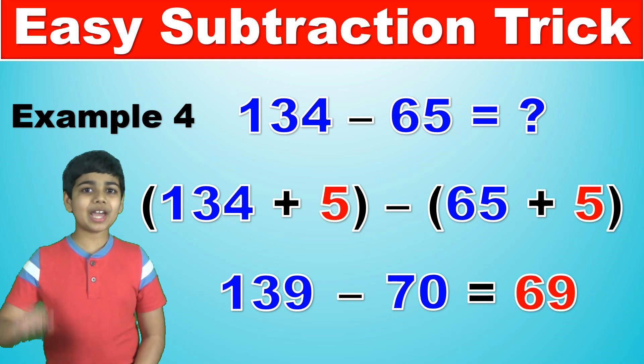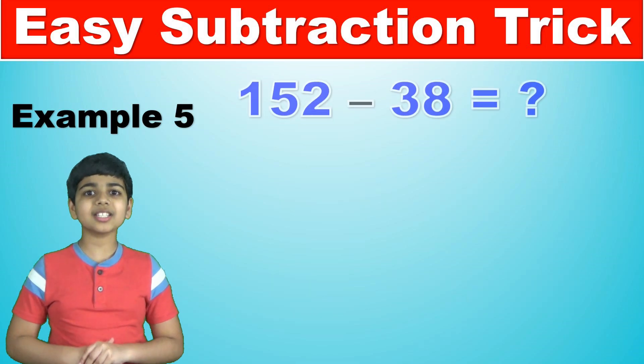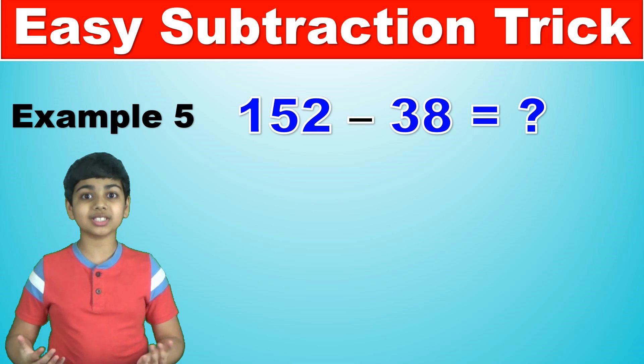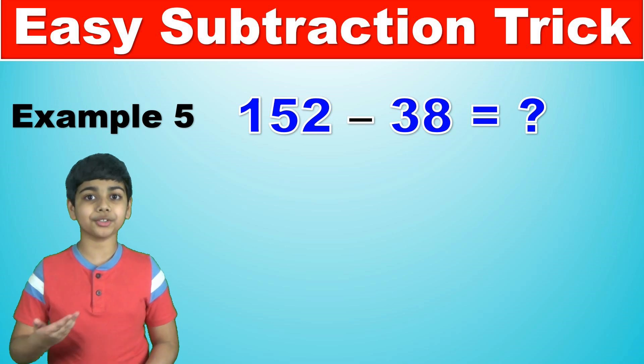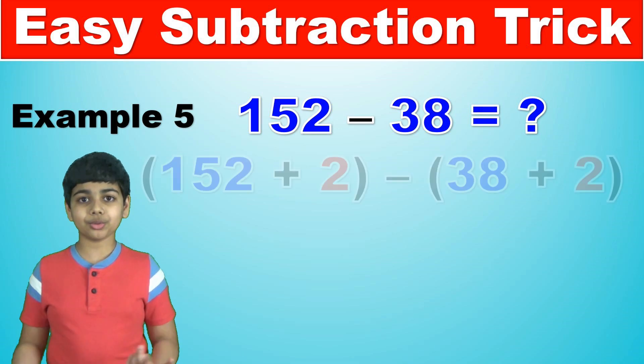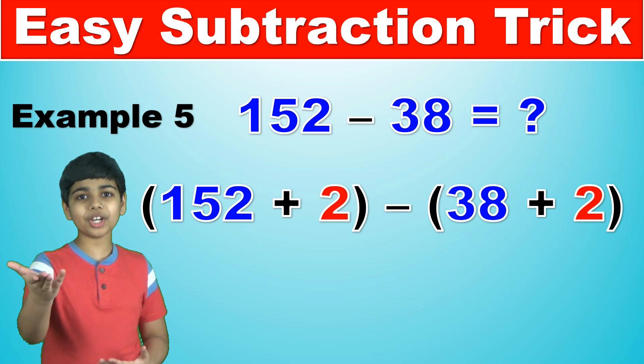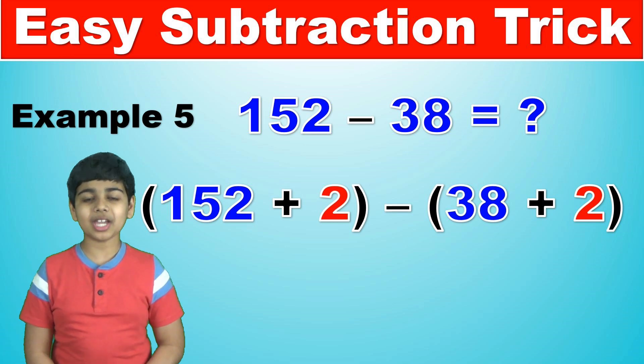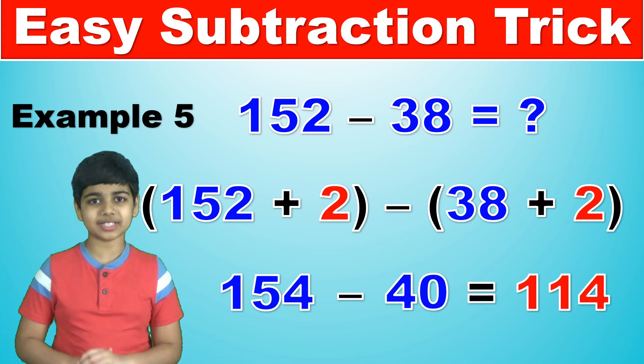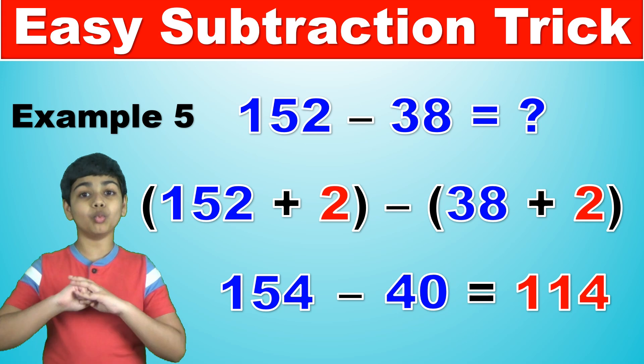Let's take a look at one final example. Let's take a look at 152 minus 38. So once again, the nearest multiple of 10 to 38 is just 40. And the difference between 40 and 38 is 2 once again. So this means that we'll have 38 plus 2. And so we'll add 2 to 152. So that means 152 plus 2 is 154. So now we have 154 minus 40. The answer is 114. So this is a wonderful trick.